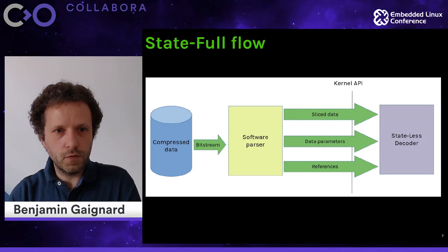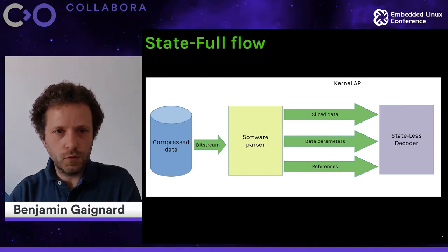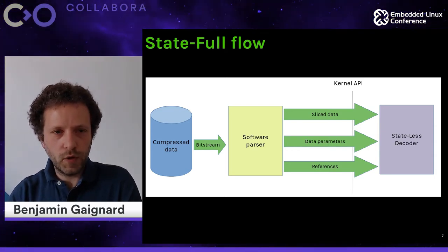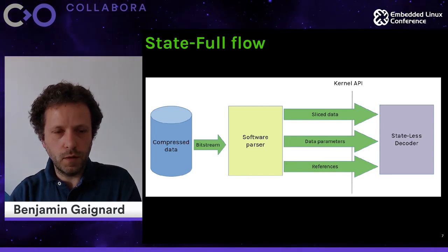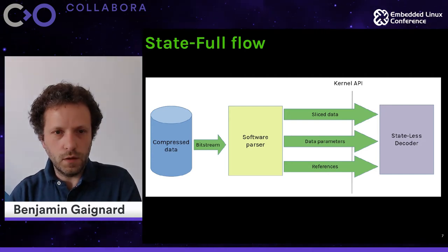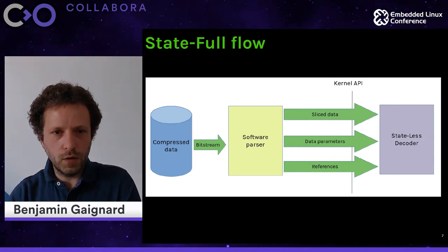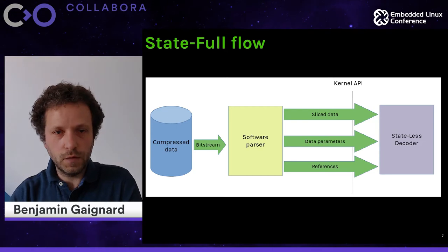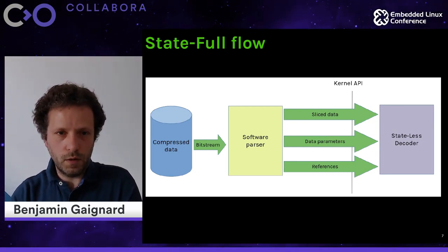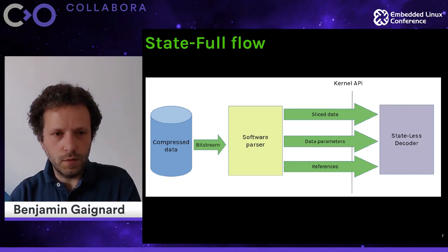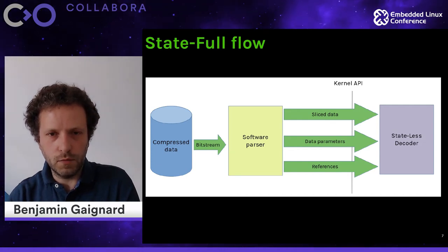For the stateless API, the flow is quite different. You still have compressed data from which you get a bitstream, but you need to use a software parser to extract the data needed to perform frame decoding with the stateless hardware decoder. The software parser extracts the slice or frame from the bitstream, and also extracts additional parameters like the reference list, number of references, and parameters to apply. Everything must be prepared by software in userland, meaning the kernel API is more complex since you have to define more structured data and flow inside the decoder, all in parallel with sending to the hardware to produce one decoded frame.